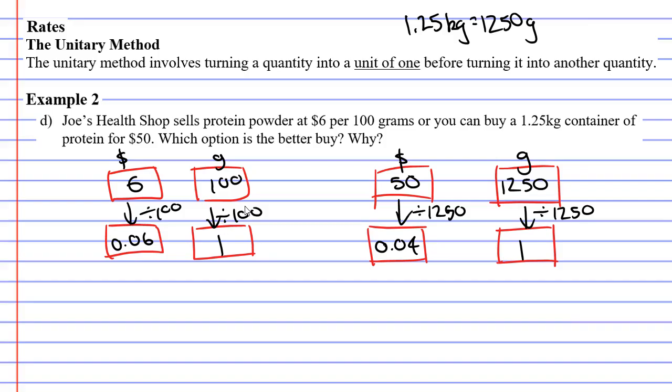What you will notice is in one scenario it's the equivalent of $0.06 per gram, and in the other scenario we get $0.04 per gram. So which option is the better buy? The 1.25 kilogram container is the better buy.